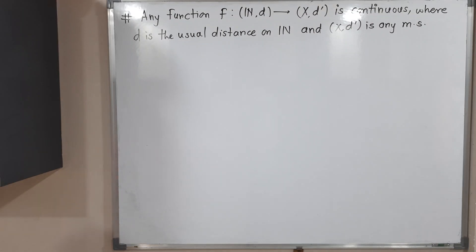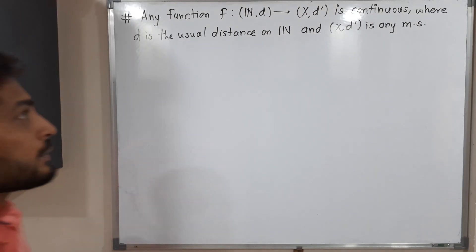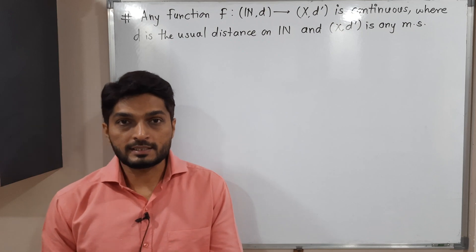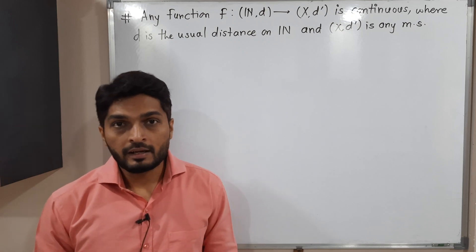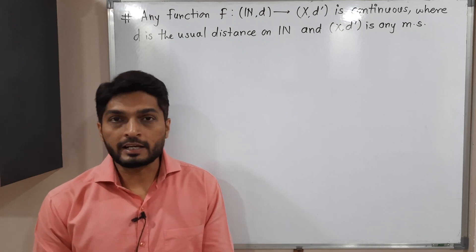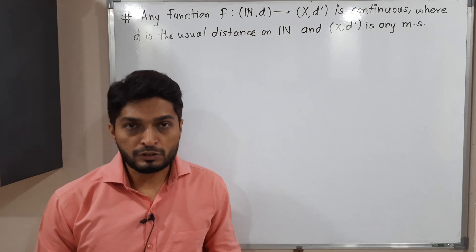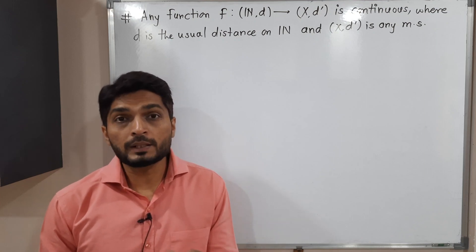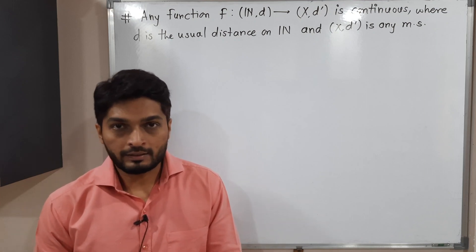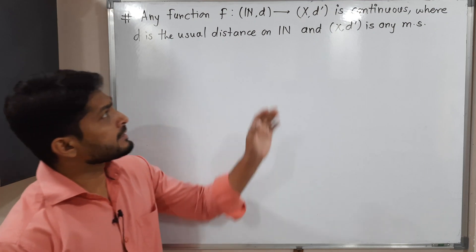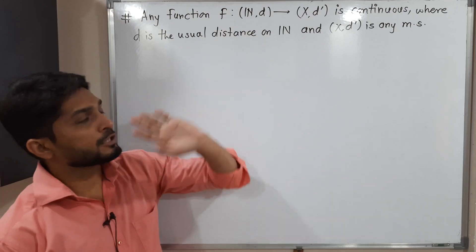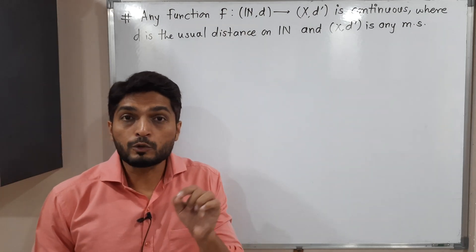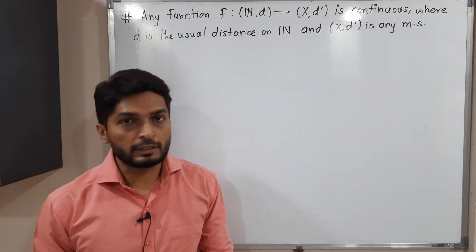Hi everyone. In this video we are going to discuss this result. Here we have two metric spaces: (N, d) and (X, d'). N is the set of natural numbers and d is the usual distance defined on N, and (X, d') is any metric space. Then we have to prove that any function from N to X is continuous.